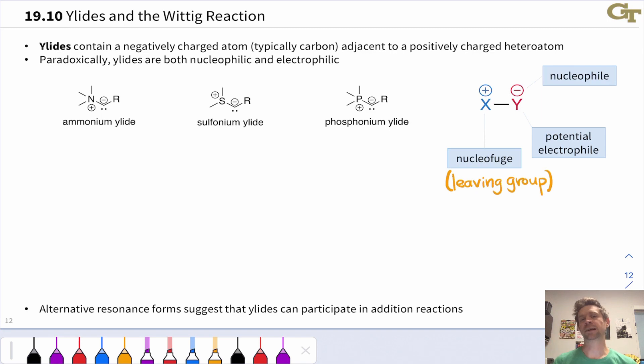There's an interesting reactive intermediate involved in the Wittig reaction that I wanted to touch on first. It's known as an ylide, and ylides contain a negatively charged atom, which is typically carbon, adjacent to a positively charged atom that's typically a heteroatom: phosphorus, sulfur, etc. Third row elements are typical here.